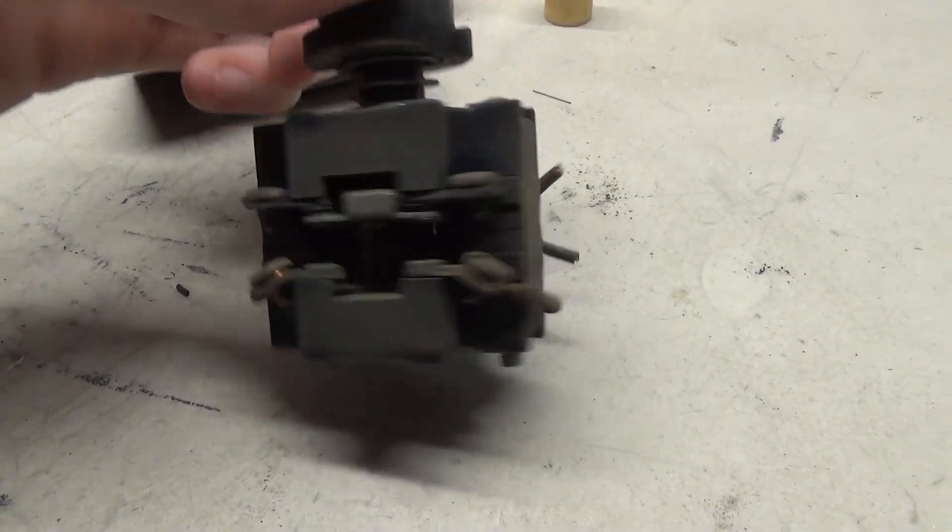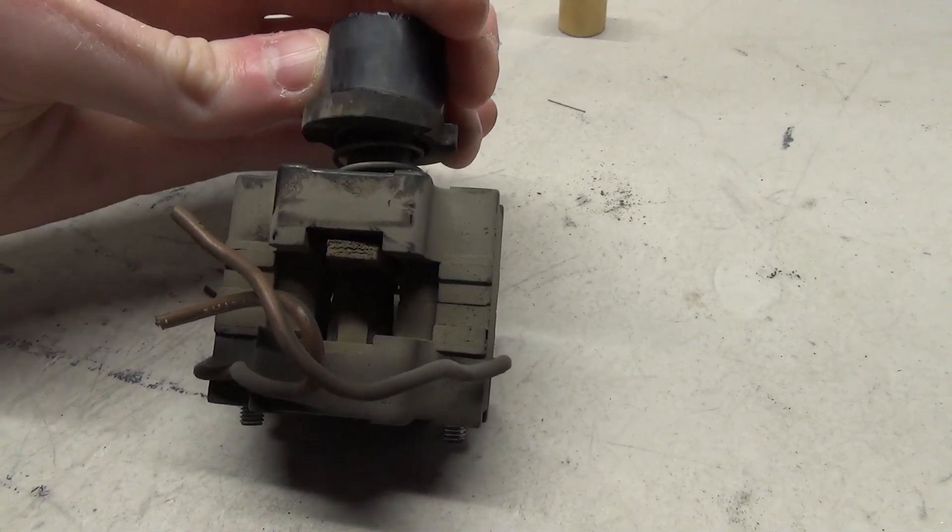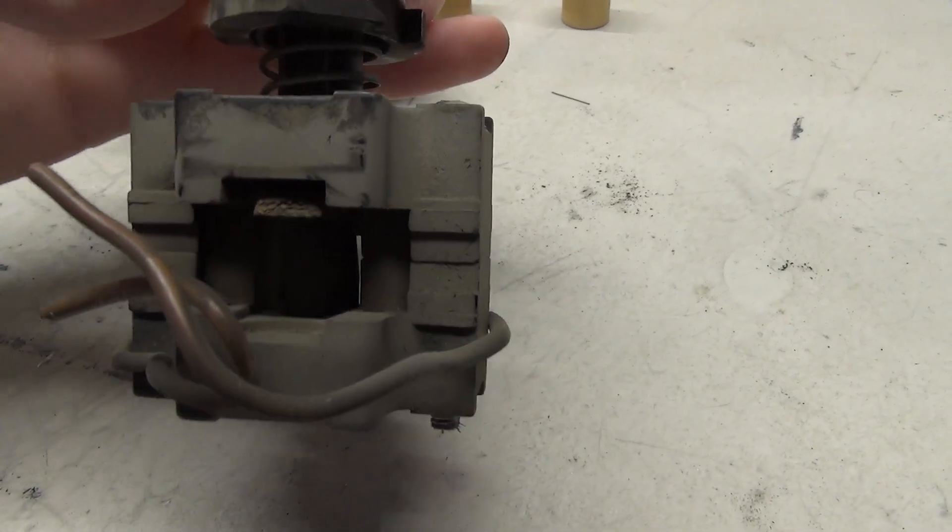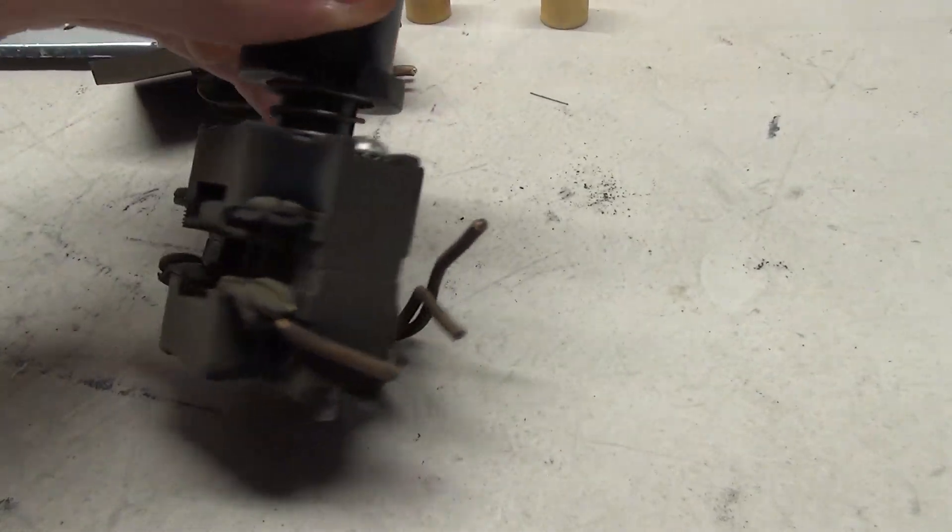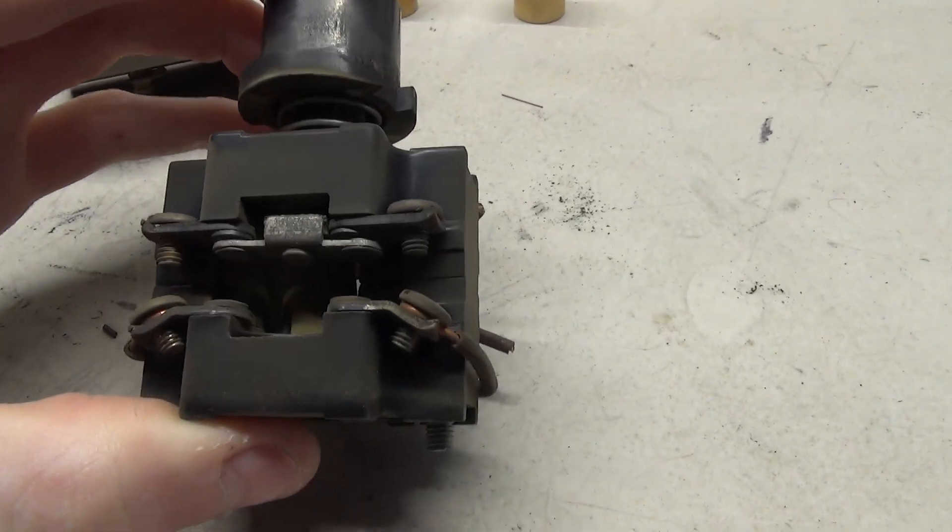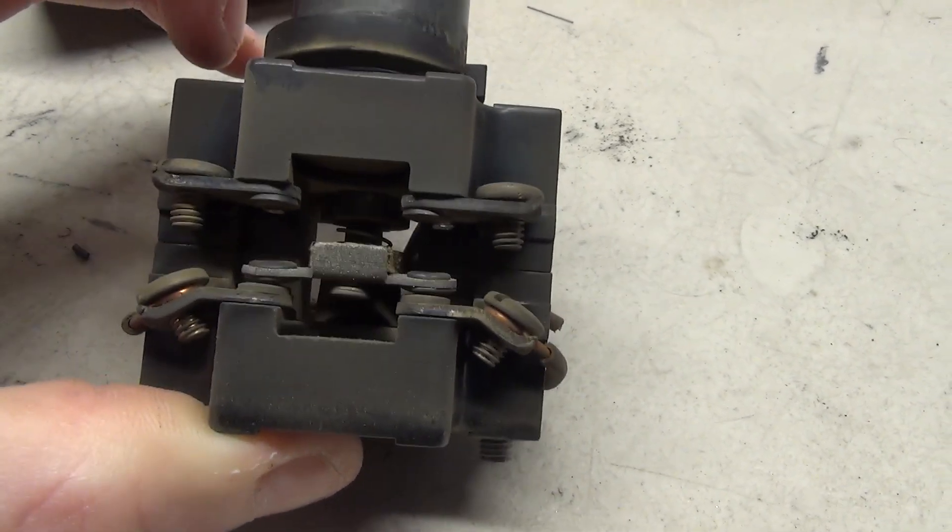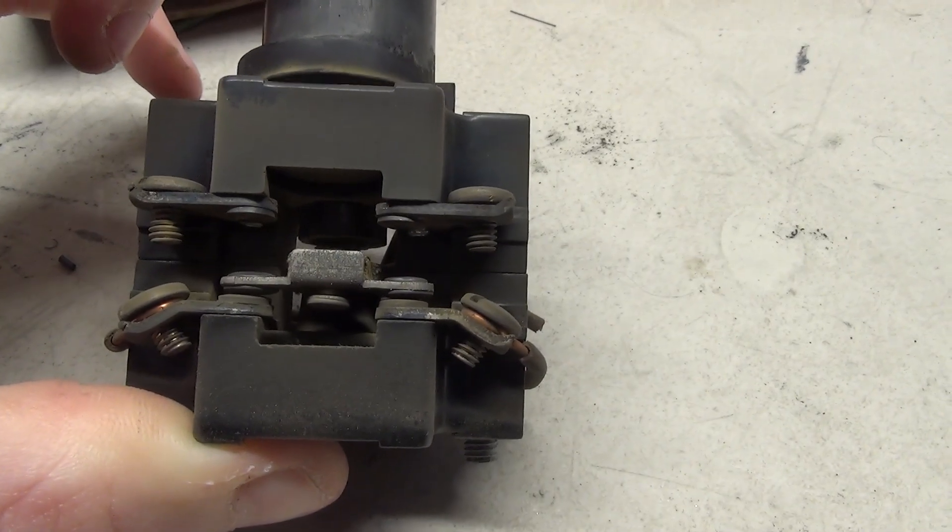Taking a closer look at the button it appears that there is only one set of contacts, at least on this one looks like there could be two. It's also really gross looking. And it's really simple how it works: when you press the button down these contacts get pressed against those two bottom ones which completes the circuit.